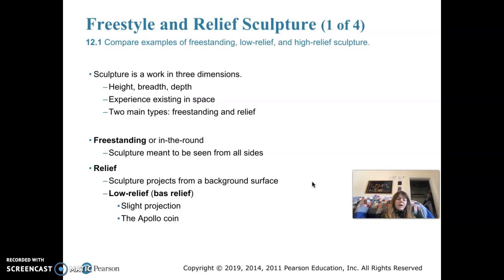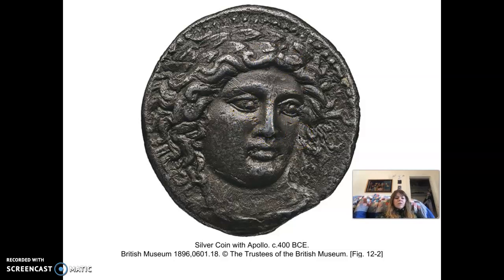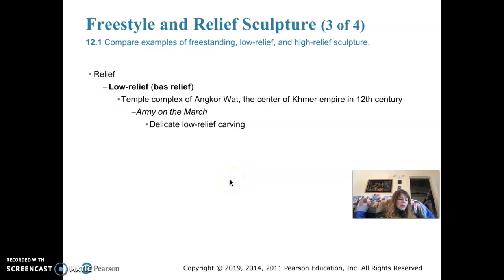A sculpture that is not freestanding but projects from a background surface is called relief. Low relief, sometimes called bas-relief, means the projection from the surrounding surface is slight, so shadows are minimal. It's essentially a flat surface that's been carved into, but not too deeply. An example is the Apollo silver coin from 400 BCE — a piece stamped from a mold that has a slight 3D projection in the face, nose, eyes, and hair, but not projecting very much.